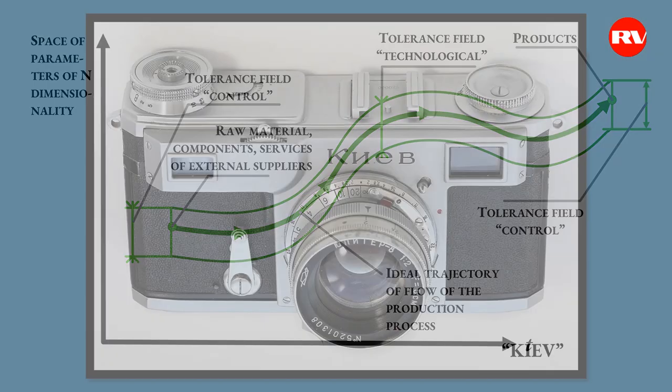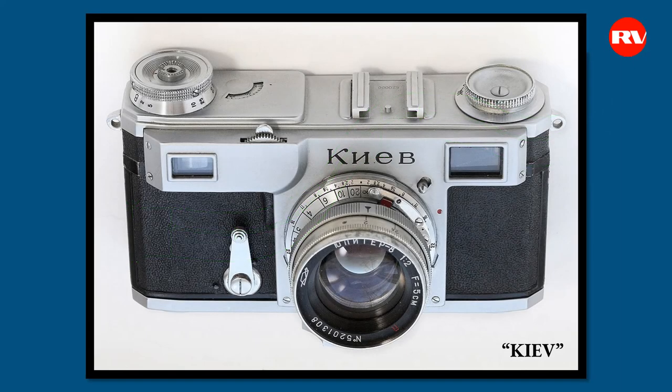Moreover, there were cameras, for example the Kiev, which had very peculiar film reels. After the film reel has been put into the camera, the camera locks — locking the camera opened the film, and this eliminated the friction of the film against the film bobbin and accordingly excluded the possibility of it being scratched with dust and dirt that could accumulate in the film bobbin.